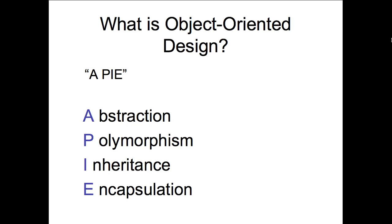Essentially, what we're looking at is the APIE concept — abstraction, polymorphism, inheritance, and encapsulation. We're going to put all these pieces together and I'll show you how it relates to the Java programming language. Keep in mind that everything I'm going to show you also applies to other programming languages — C++, Smalltalk, or any other language that is purely object-oriented in nature.